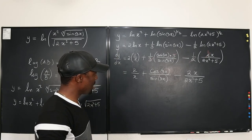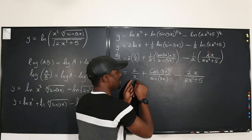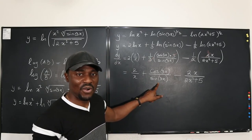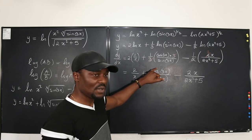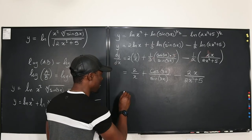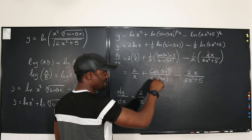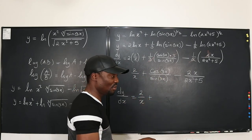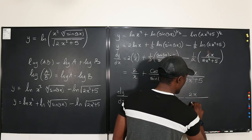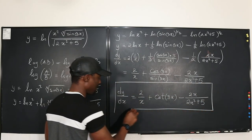There's no further simplification for the first or last term — if you try to combine them, it only gets more complicated. But cosine over sine is the reciprocal of tangent, which we call cotangent. So dy/dx equals 2 over x plus cotangent of 3x minus 2x over 2x squared plus 5. And that is the desired answer.